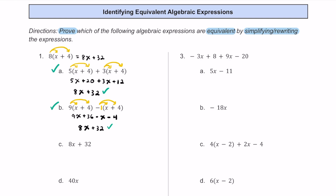For answer choice C, we have 8x plus 32, which is exactly what we had when we distributed, so we know that one works without needing to do anything further. For option D, we have 40x — that must have come from trying to combine 8x plus 32, but keep in mind that these are not like terms, so you cannot combine those.